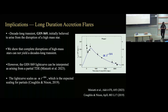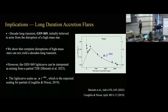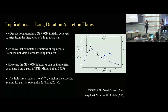One more question: if I'm remembering correctly, GSN 069 is also one of the QPE sources. Does the partial disruption interpretation run into issues with the QPE interpretation, or is it still too uncertain? Response: Not that I know of, because the QPE mechanism is not just the tidal disruption itself. So I don't think we run into anything with the QPE interpretation.